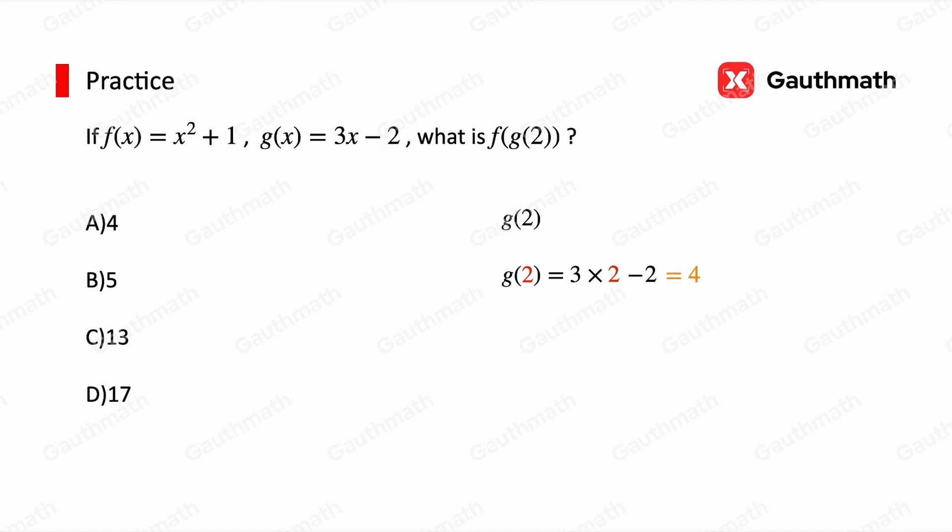Then g(2) is the input for f(x). So g(2), which is 4, is our new input for f(x). We substitute 4 into f(x), which equals 4² + 1 = 17. The correct answer is D.